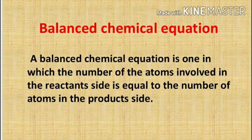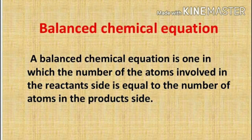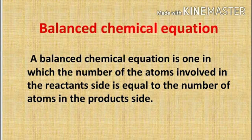For this reason, all chemical equations which represent a chemical reaction should always be balanced. A balanced chemical equation is one in which the number of atoms involved on the reactant side is equal to the number of atoms on the product side.